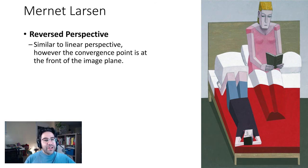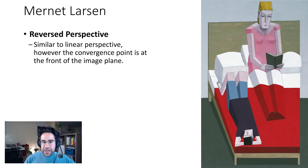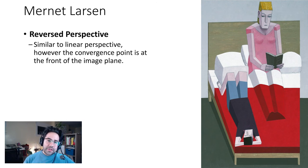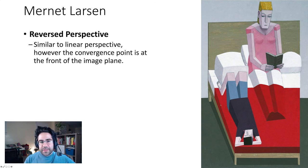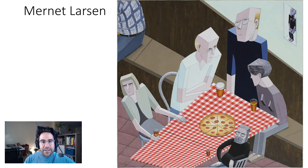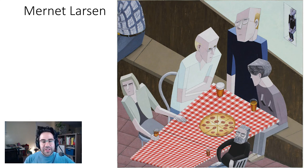Another really strange and interesting projection system is reverse perspective. This follows all the same rules as linear perspective, but the difference is the convergence point — rather than being off towards the horizon line, it's actually closer to the front of the image plane. So things are getting smaller as they get closer to the image plane and bigger as they get farther away. You can see another example of that here, and it's amazing how such a small shift can really upend the feeling of looking at an image.